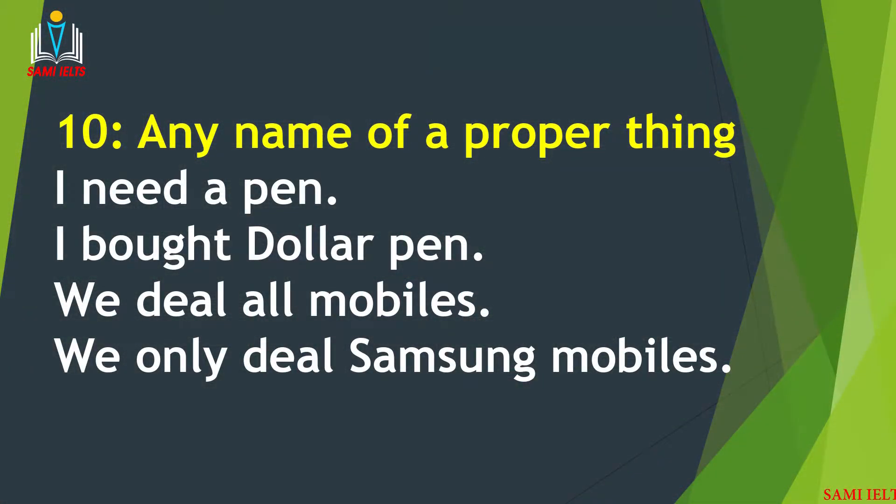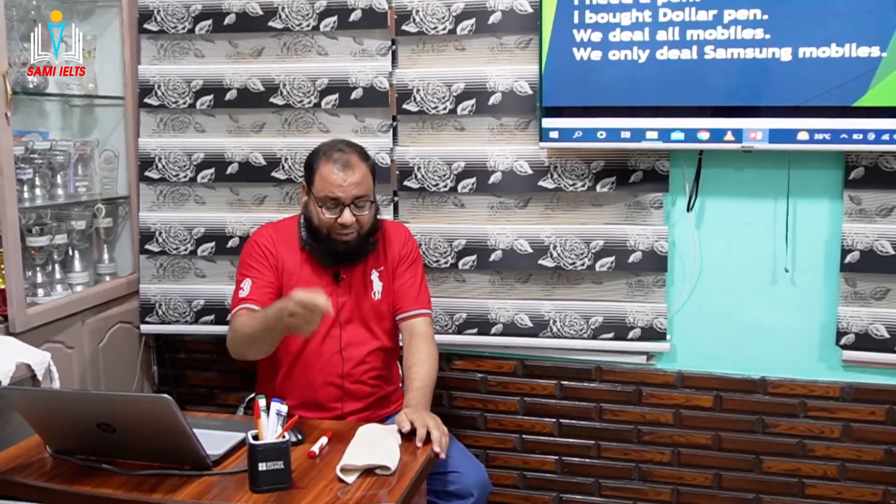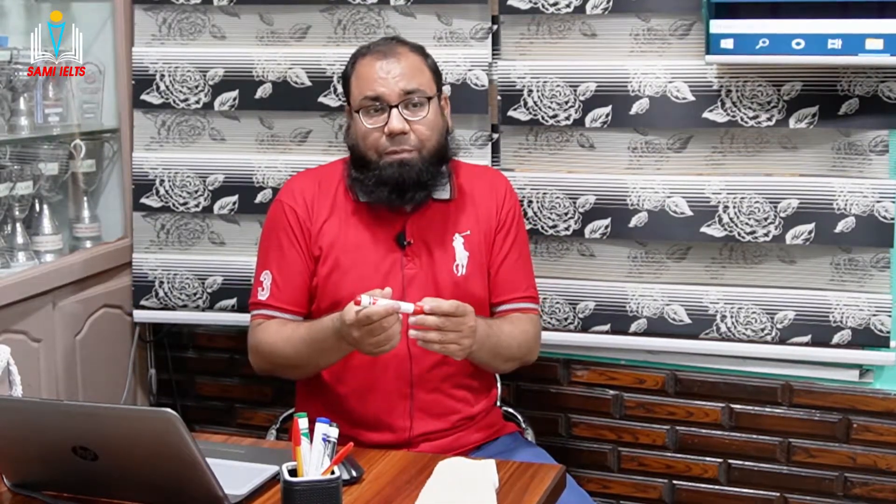The last point we discussed was rule number 10 — the name of a proper thing. If I say 'marker,' the M is always small because it's a common noun. But if you want to highlight a specific marker and say 'Dollar marker,' then the D must be capital while marker M remains small.